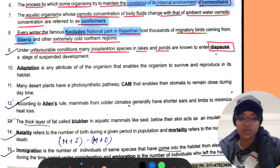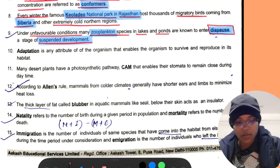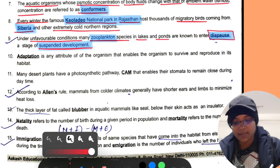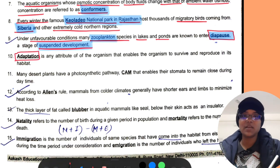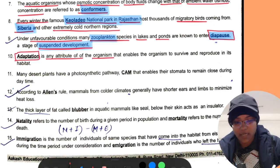Under unfavorable conditions, zooplankton species in lakes and ponds are known to enter diapause, a stage of suspended development.